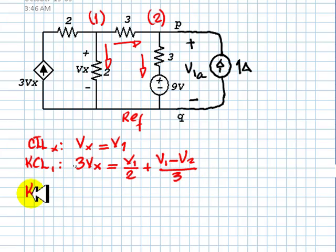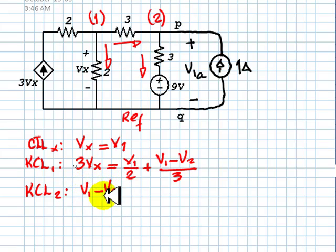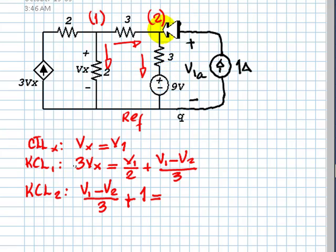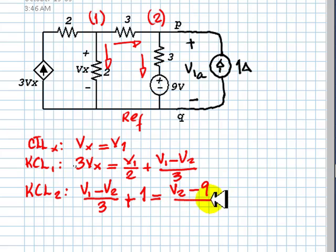KCL for node 2: the currents going in are 1Amp and V1 minus V2 over 3. Those equal the currents coming out, which include the RV branch current: V2 minus 9 over 3.